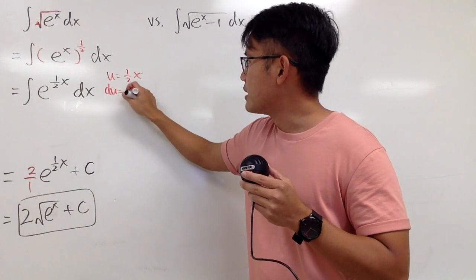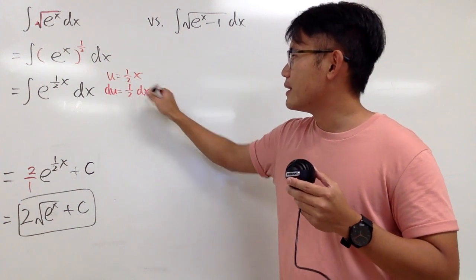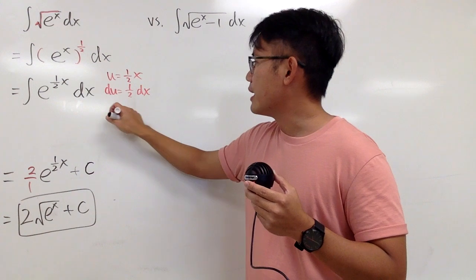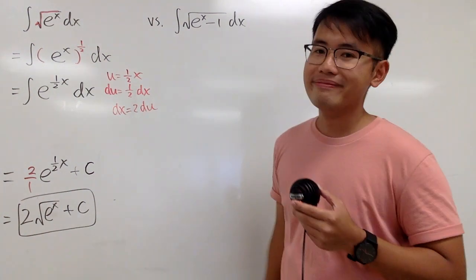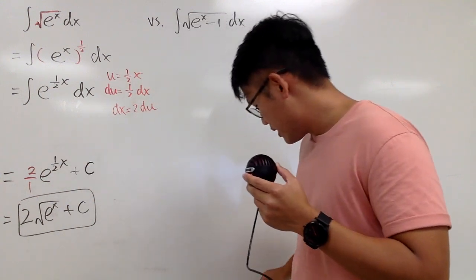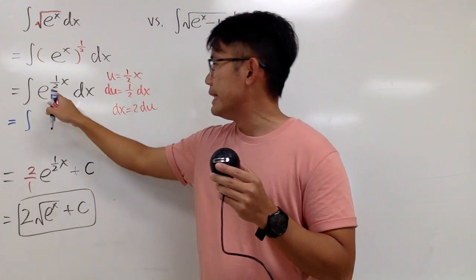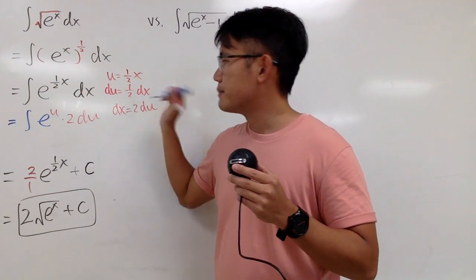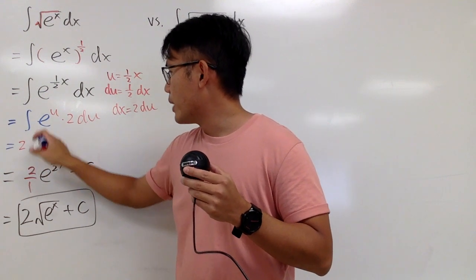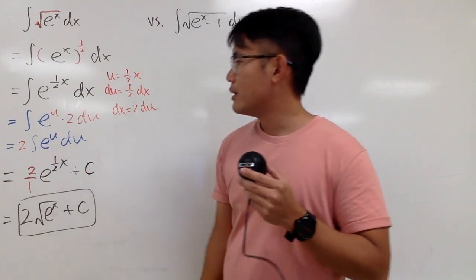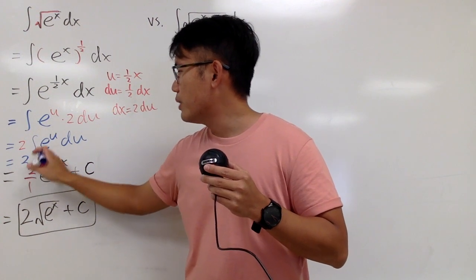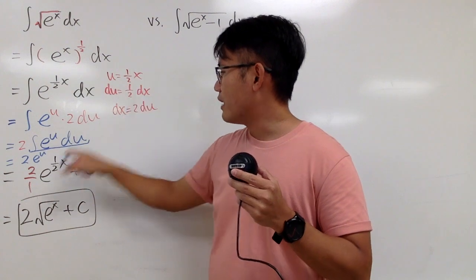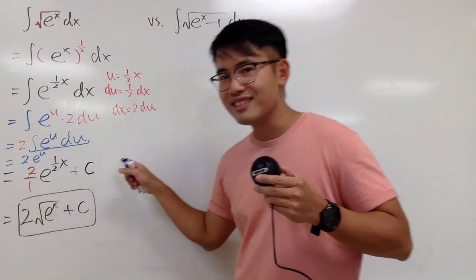Differentiate both sides: du equals 1/2 dx. This coefficient is just a constant multiple, so to isolate dx I multiply 2 on both sides: dx equals 2 du. Taking this integral into the u world, we are integrating e to the u times 2 du. Bring the 2 to the front: 2 times the integral of e to the u du, which is just e to the u. Then plug (1/2)x back in for u, giving 2 e to the (1/2)x plus c. And you're done.